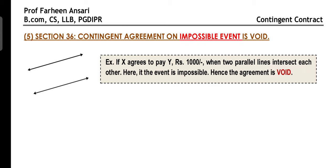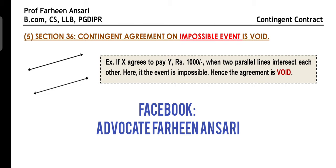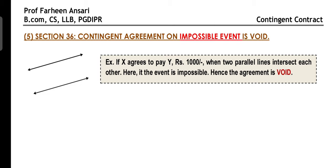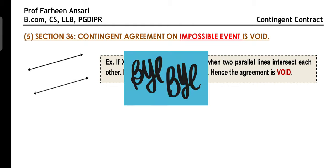This was all about Contingent Contracts. Hope you've understood the same clearly with examples. If you have any doubts, do let me know in the comments below. For all the latest updates, you can reach me on my Telegram or Facebook Messenger. For creative notes on Indian Contract Act for CA, CS, and law students, do join my Telegram group — the link is in the description below. Until we meet next time, thank you everyone. Bye-bye.